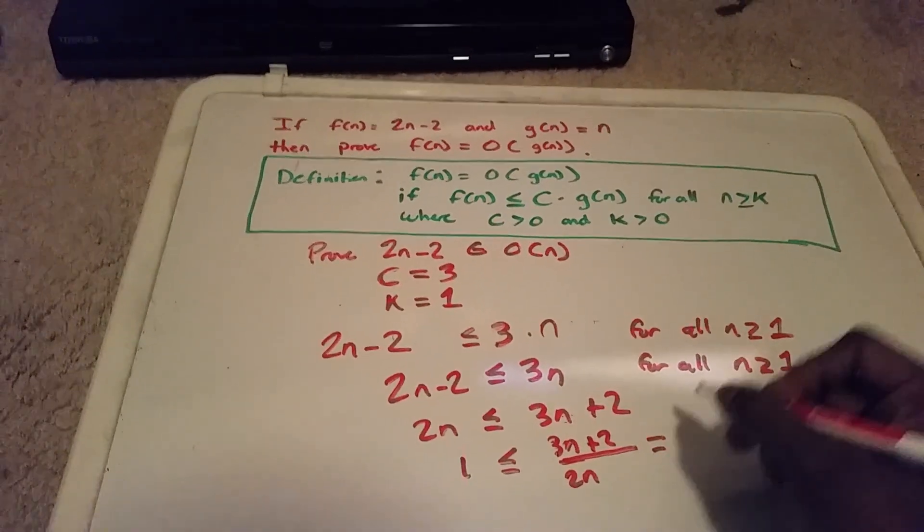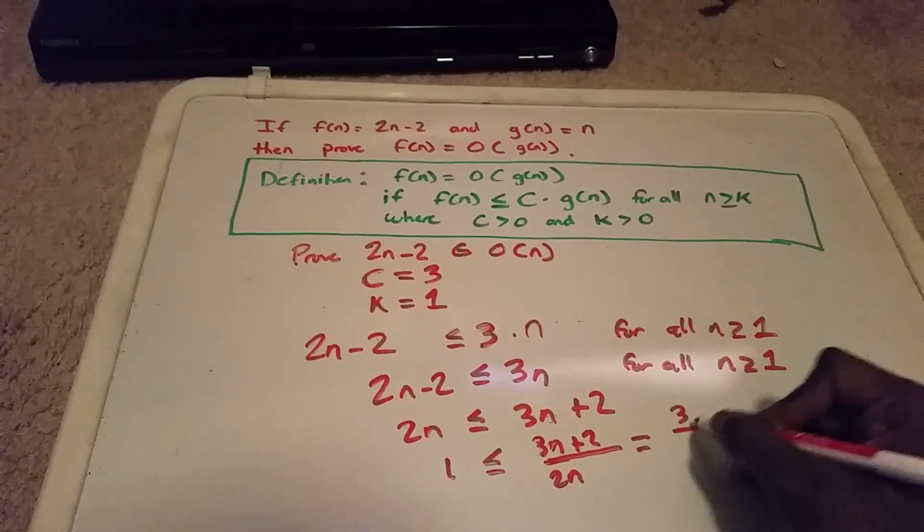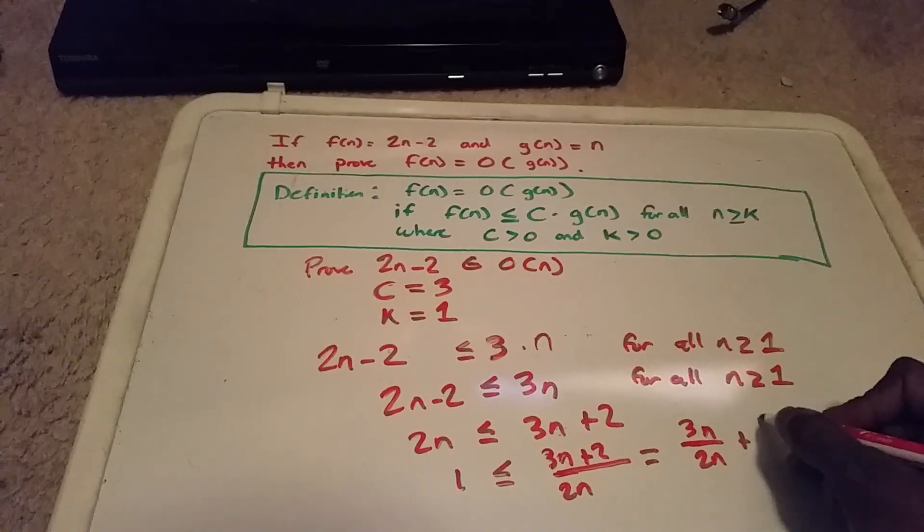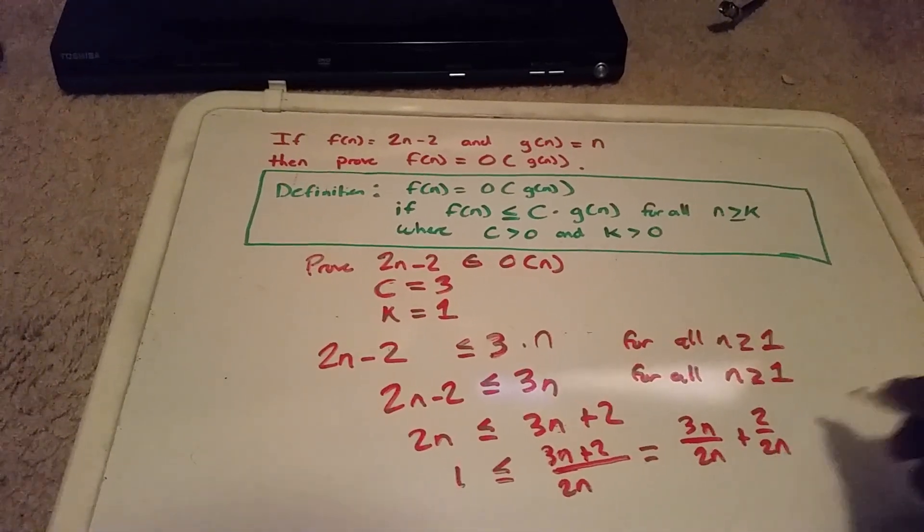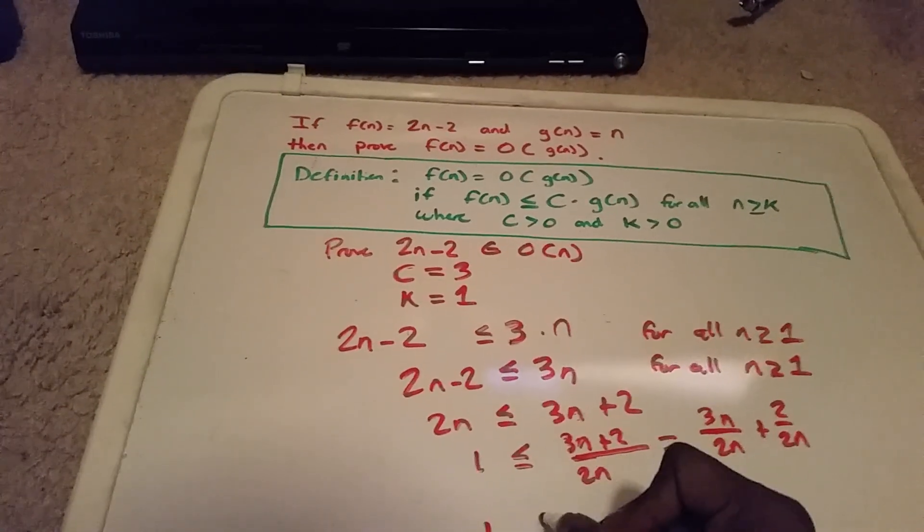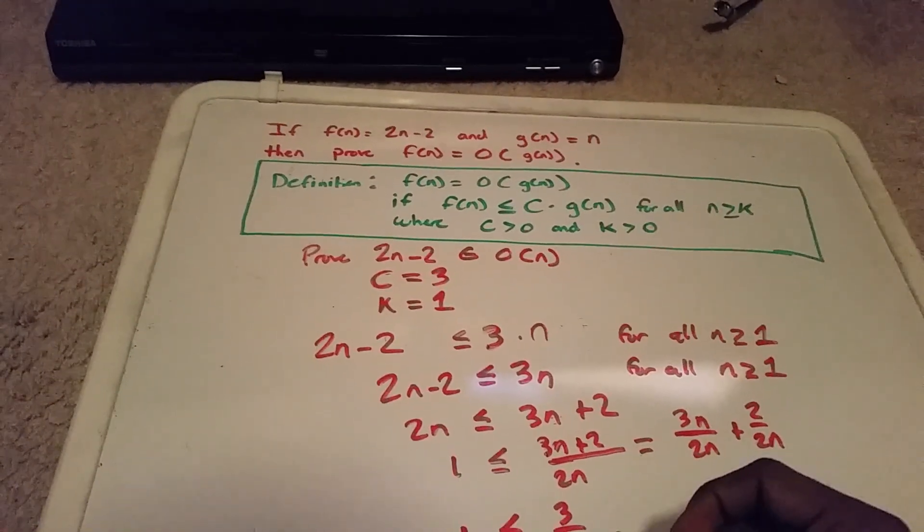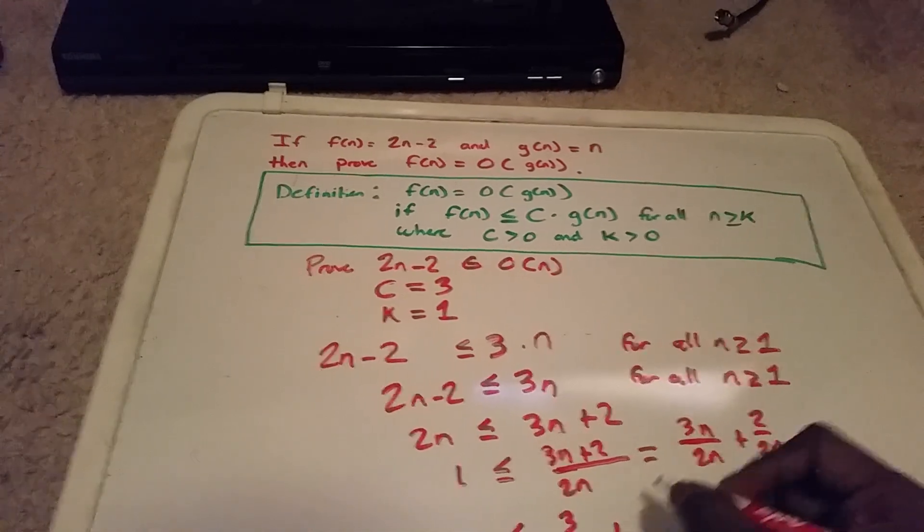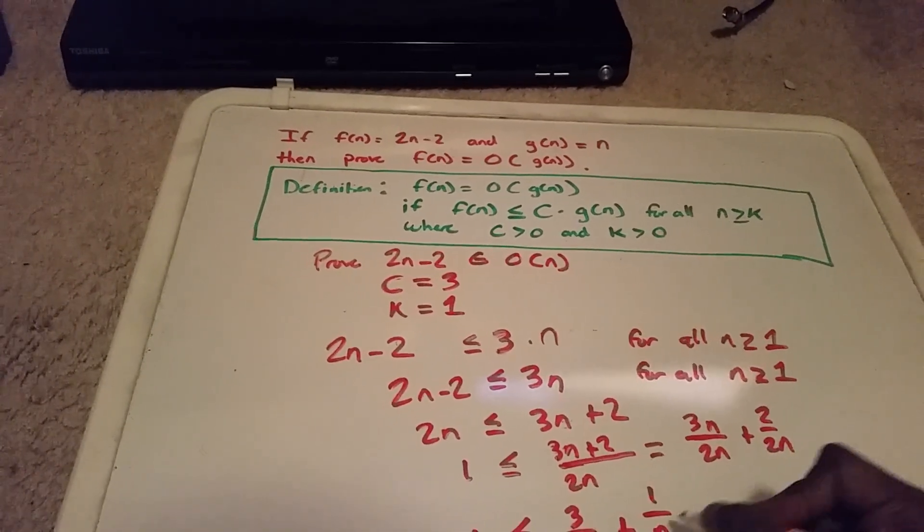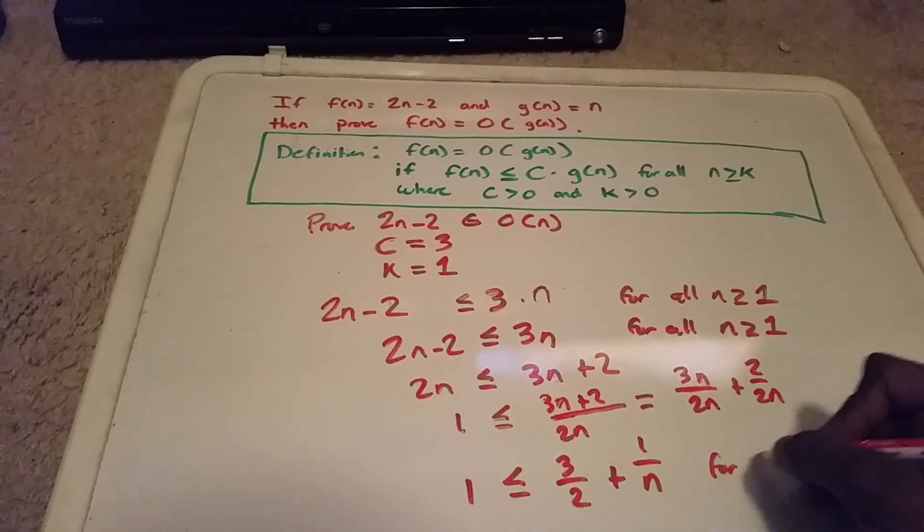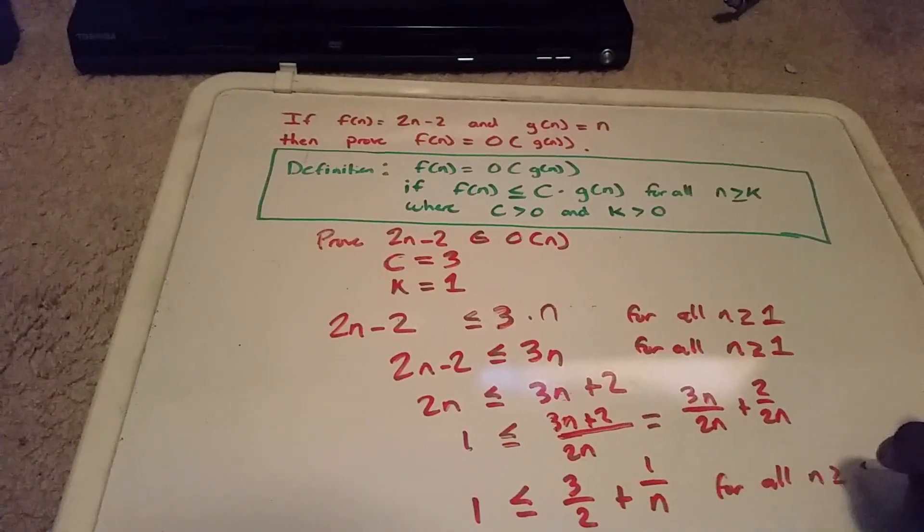This side is equal to 3n divided by 2n plus 2 divided by 2n. So now we have 1 is less than or equal to 3 divided by 2 plus 1 over n, and this is for all n greater than or equal to 1.